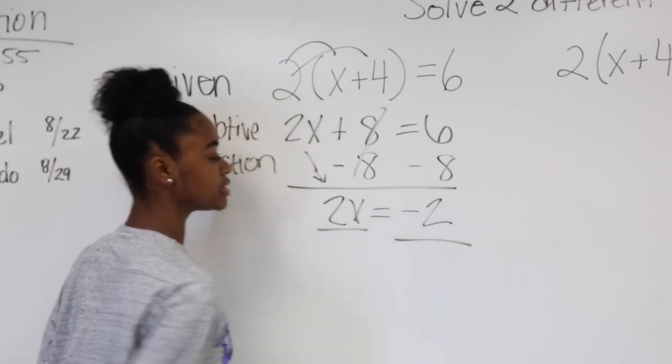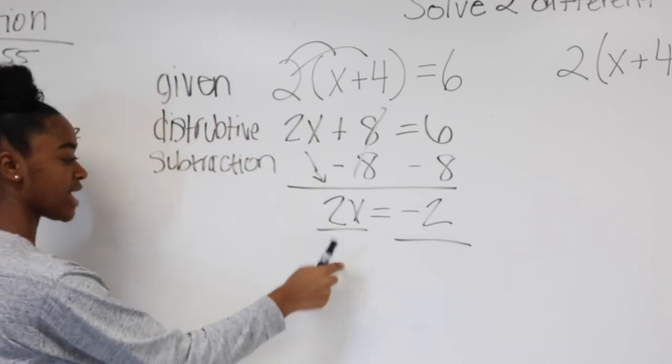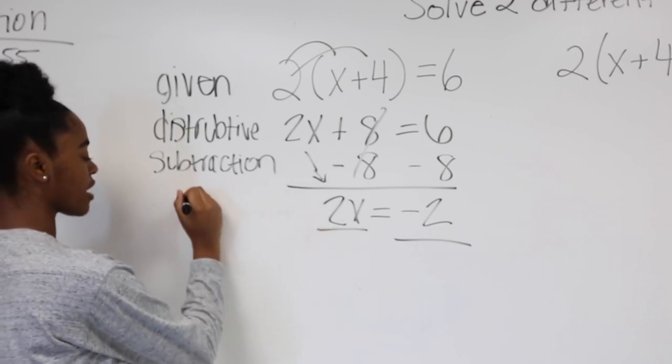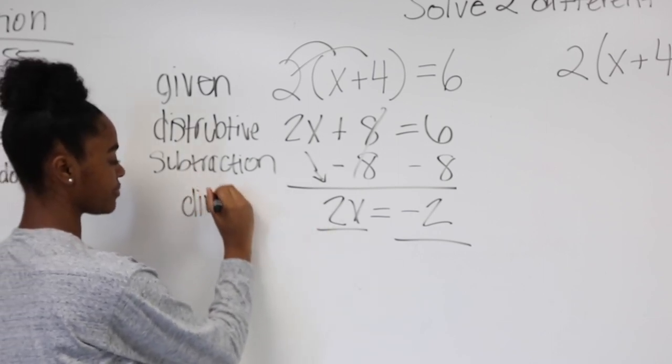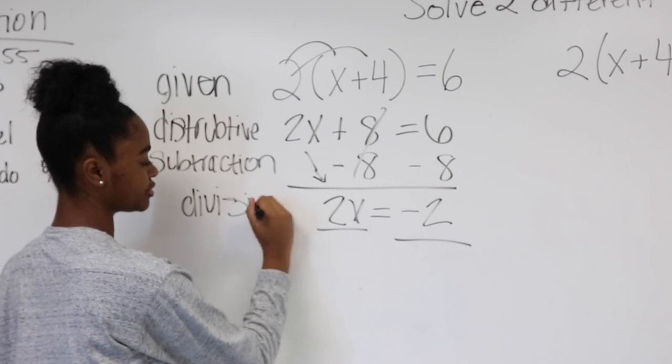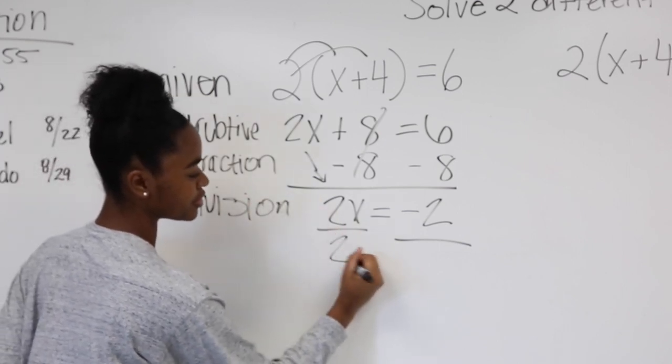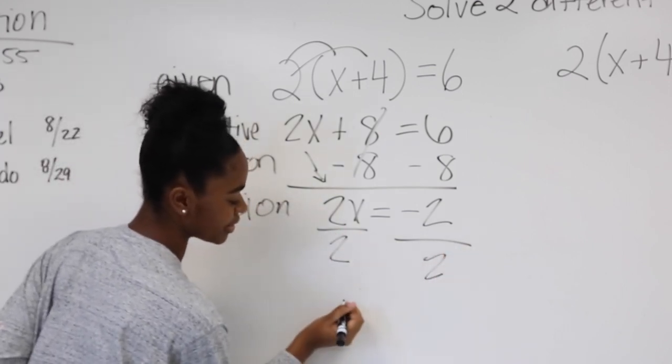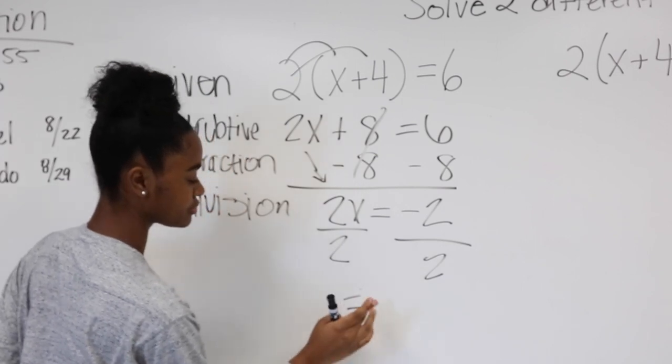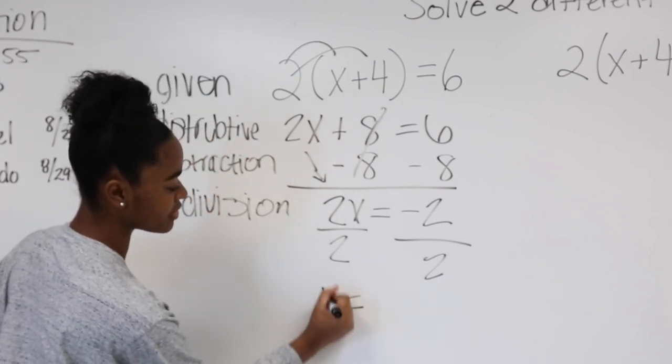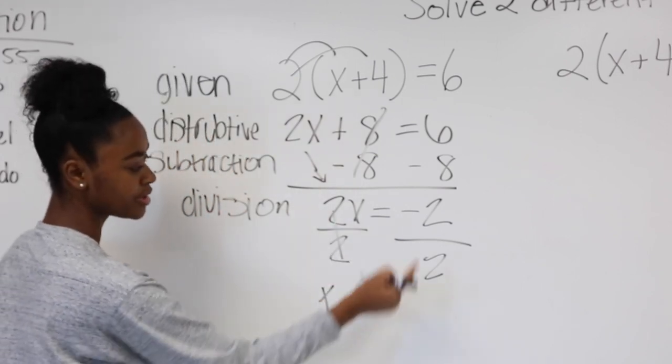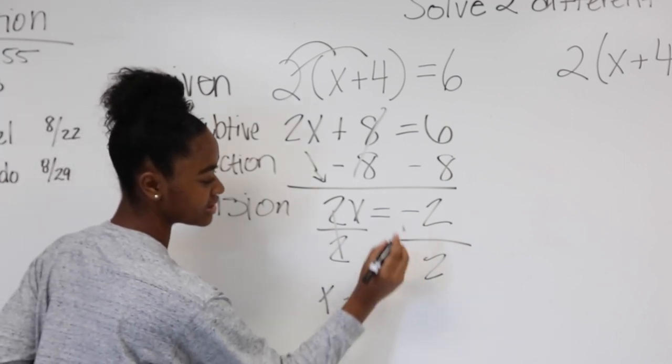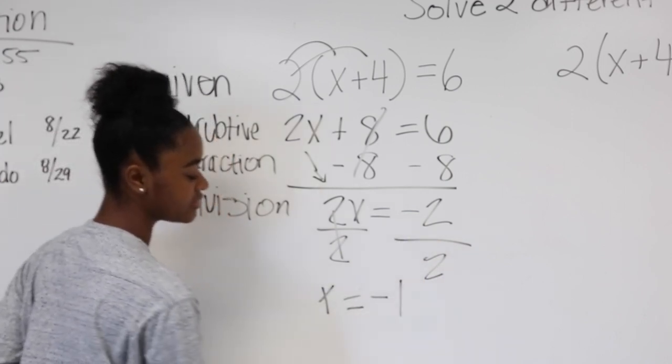So you divide that because you want the x by itself. So that's your division property. 2 divided by 2. So that's equal. So x, that's crossed out. And that's going to be negative because it's a negative 2. And that's your solution.